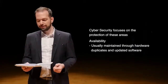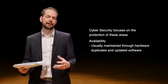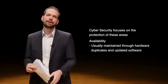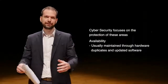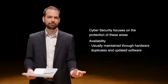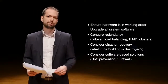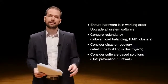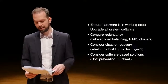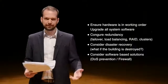Availability is usually maintained through hardware duplicates and updated software — making sure you have some sort of redundancy. If the information is compromised or the computer breaks, another computer can take over for it. Big companies have a lot of different servers, so if one server's hard drive fails, all the other servers take over, giving basically full-time availability. Ensure hardware is in working order and update all system software. Software that's not updated is more vulnerable to different viruses or exploits, meaning someone could potentially take over the computer and compromise confidentiality, integrity, or availability.